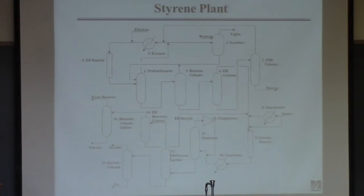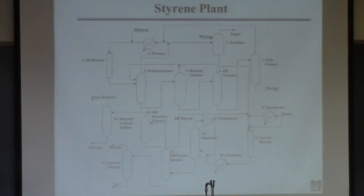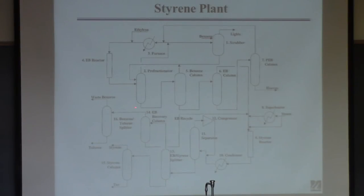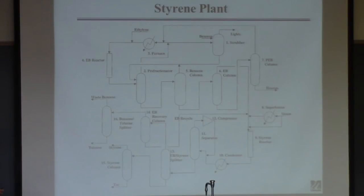You're not supposed to understand all the details, but you should appreciate that this is way beyond the complexity we've talked about in class. If you went into a real plant, this is what you'd be dealing with. A control engineer and a process engineer would typically split the plant into sections — one for the ethyl benzene part and one for the styrene part.